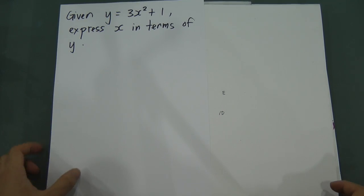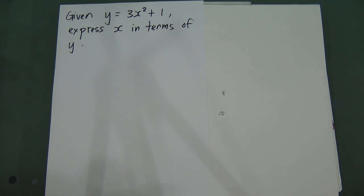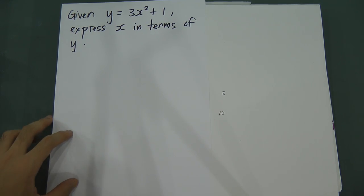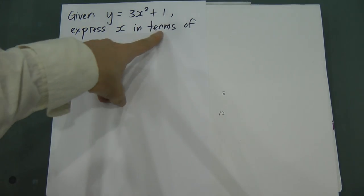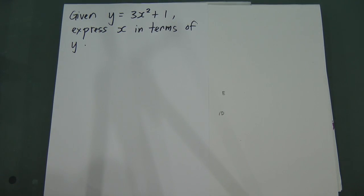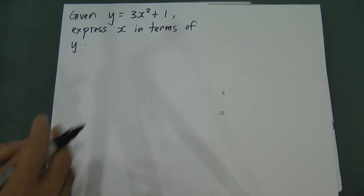This is another video about the algebraic formula, which is in Form 3. In this chapter, you will see a lot of things like 'express x in terms of y.' So when you see 'express x in terms of y,' the meaning is that you have to make x as a subject.